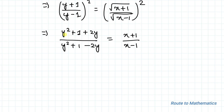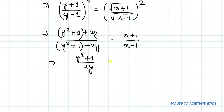Notice that this is also in the form of componendo and dividendo. We have y² + 1 appearing on both sides, so we can rewrite it as (y² + 1) / (2y) = x, which gives us equation 3: x = (y² + 1) / (2y).